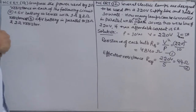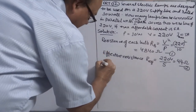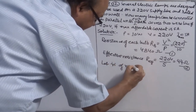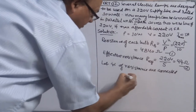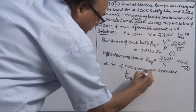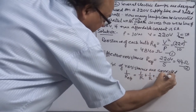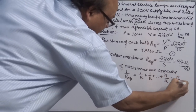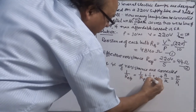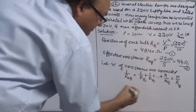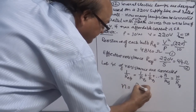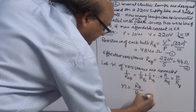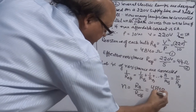Now the question is: how many resistances of value 4840 ohm do we need in parallel combination to get effective resistance 44 ohm? If n resistances are connected in parallel, the formula gives R_effective = R / n, so number of bulbs n = R_b / R_effective.